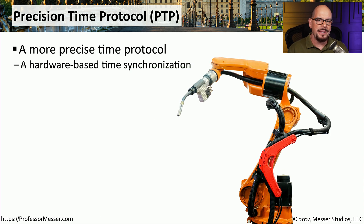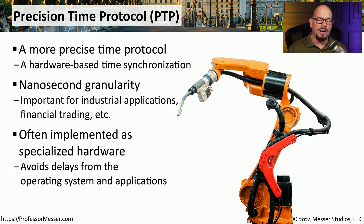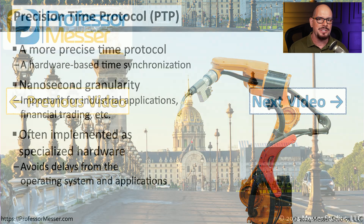With a local NTP server, we can get accuracies down to around 10 milliseconds. But in some environments we need very precise time synchronization, and we can do that by using Precision Time Protocol, or PTP. This is a hardware-based time synchronization that provides granularity down to the nanosecond. This is especially important for industrial uses where you need very precise timestamps across all devices. PTP often requires a separate piece of hardware that is separated from our operating system and applications, with its own operating system that can run without delays from any third-party process, providing the most accurate timestamps for all of your devices.